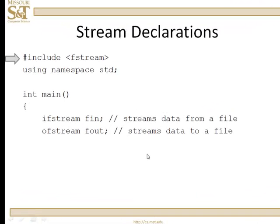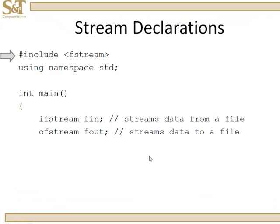If you're going to declare a stream capability from a file to your program, or from your program to a file, you need to declare a file stream. And if you're going to do that, you need to include a system file called fstream. You'll need to add to your includes fstream — of course, you only want to include these files if you use them.